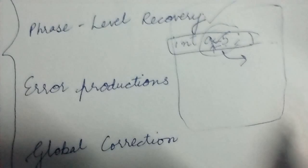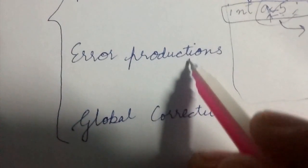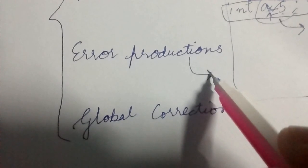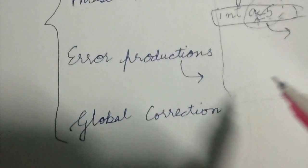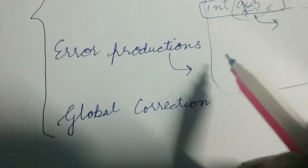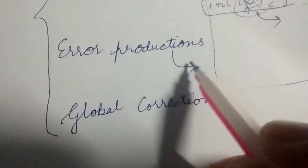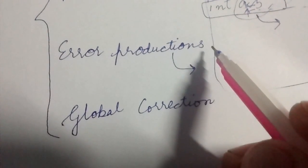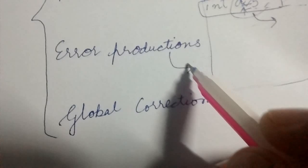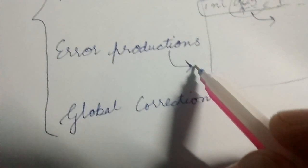Third one is error productions. What this means is this requires altering the grammar itself. You keep in mind the commonly made errors by programmers while designing your grammar, so you also include some error productions in your grammar. Let me give you an example.